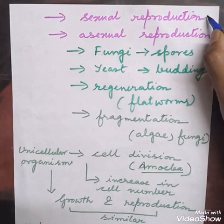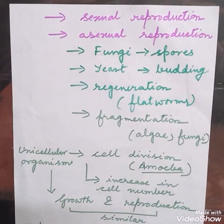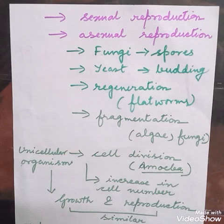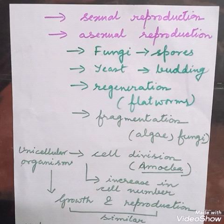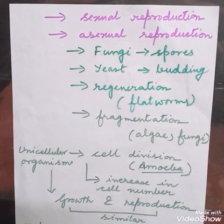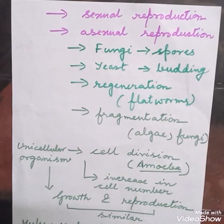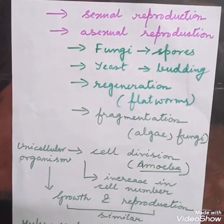Reproduction has two types: sexual reproduction and asexual reproduction. In sexual reproduction, a male and female partner must be present — both opposite sexes are required. In asexual reproduction, no partner is required. A single parent, whether a plant or animal, can give rise to one individual on its own. That is called asexual reproduction.